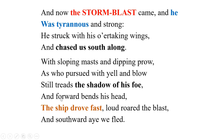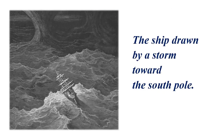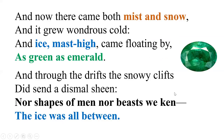The ship drove fast, loud roared the blast, and they are forced southward toward the south pole. Then: 'And now there came both mist and snow, and it grew wondrous cold, and ice mast-high came floating by, as green as emerald' — another simile. The ice is massed high so the ship cannot move, they have no clear vision, and it shines like emerald.